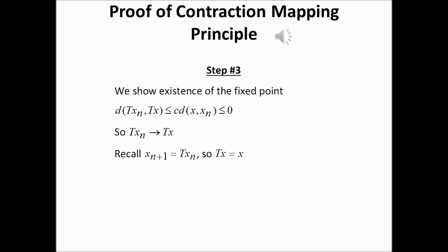By assumption we know that the space X is complete, which basically means that if X_n is a Cauchy sequence in X, then it is going to converge to some point X in the same space. So we know that since X is complete, there is some point X in X such that X_n converges to X.